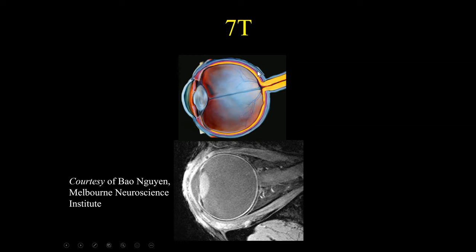When we look at the layers of the globe, this outer area is the sclera, and the pink area is known as the uveal tract. The uveal tract is comprised of three areas: the choroid, the ciliary bodies, and the iris. So the iris, the ciliary body, and the choroid are all part of the uveal tract.